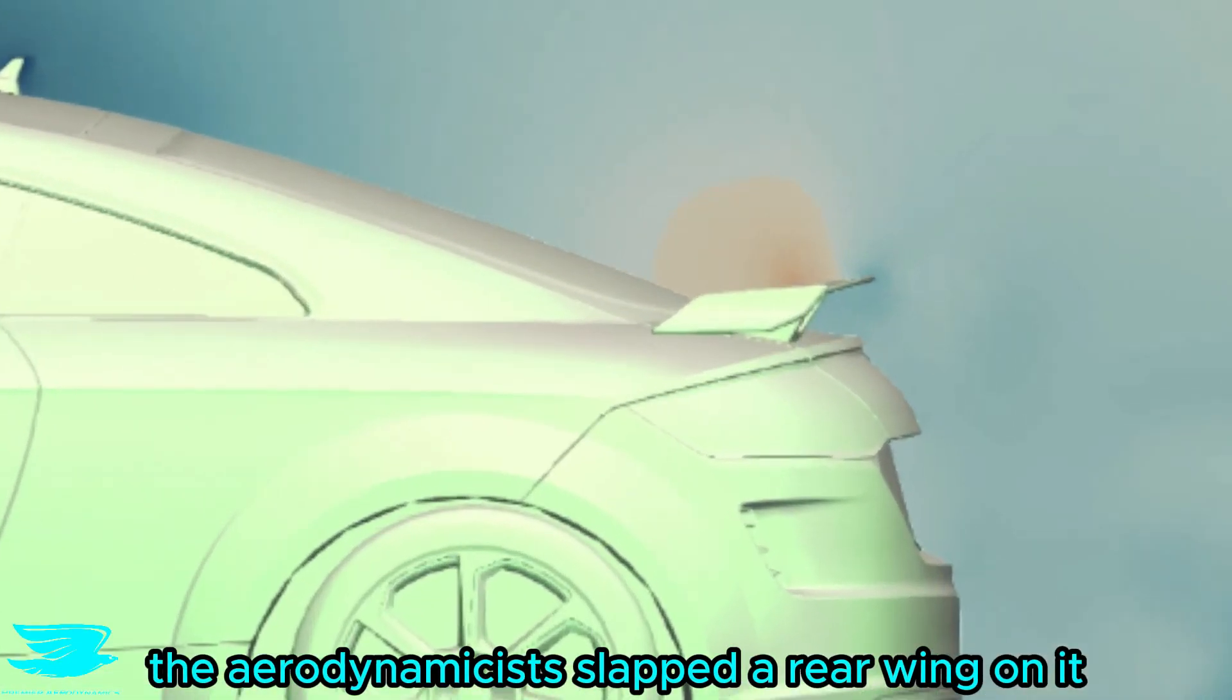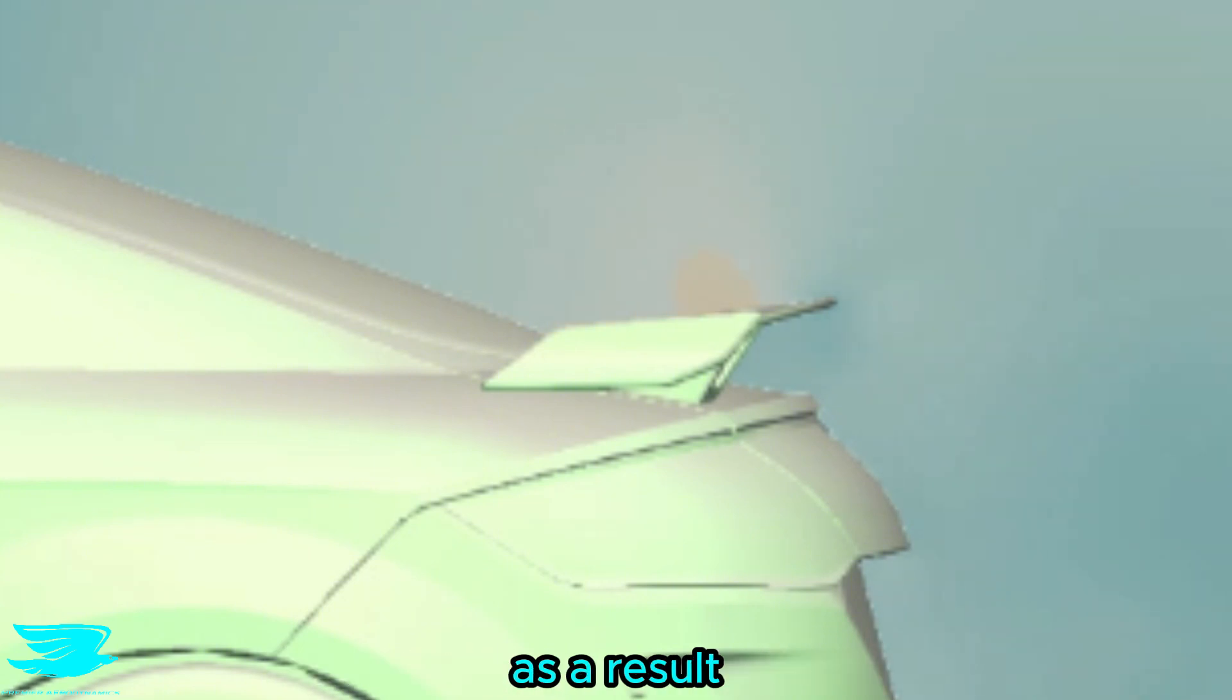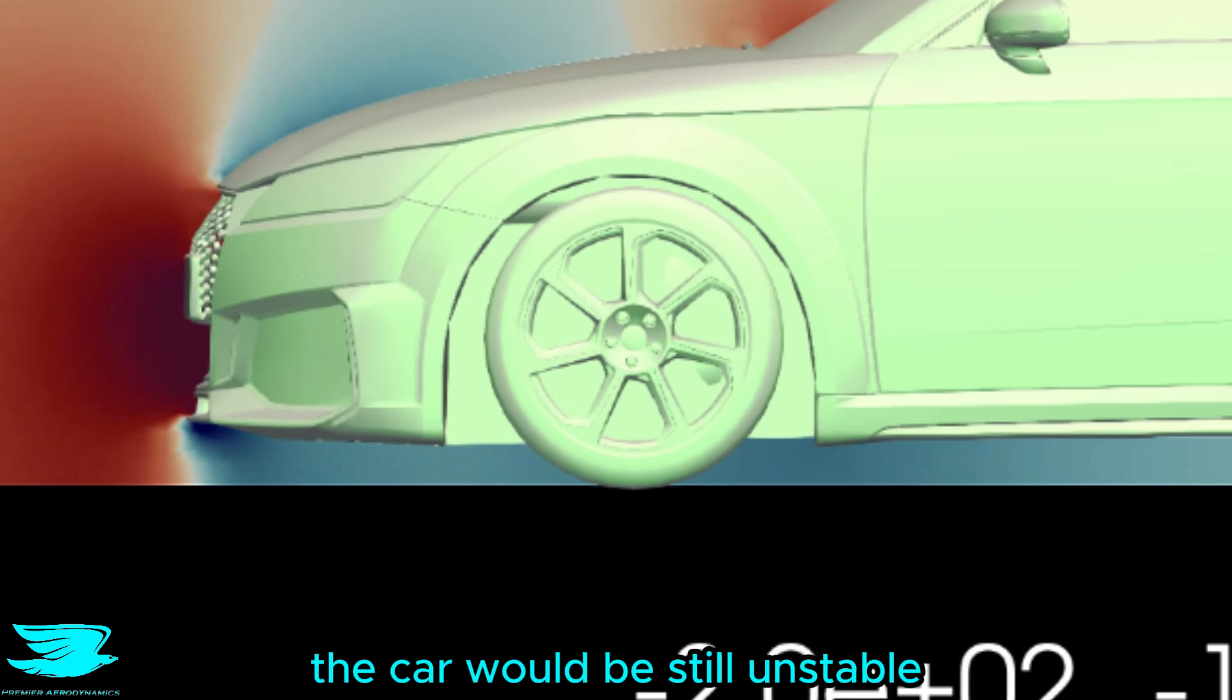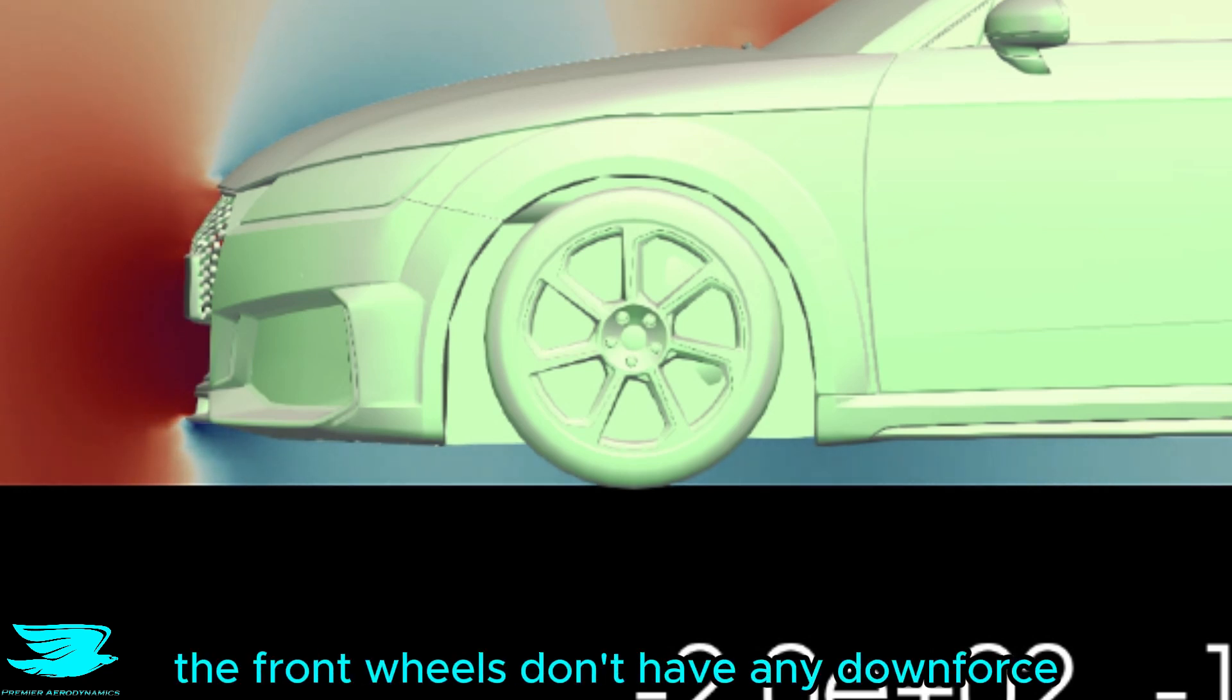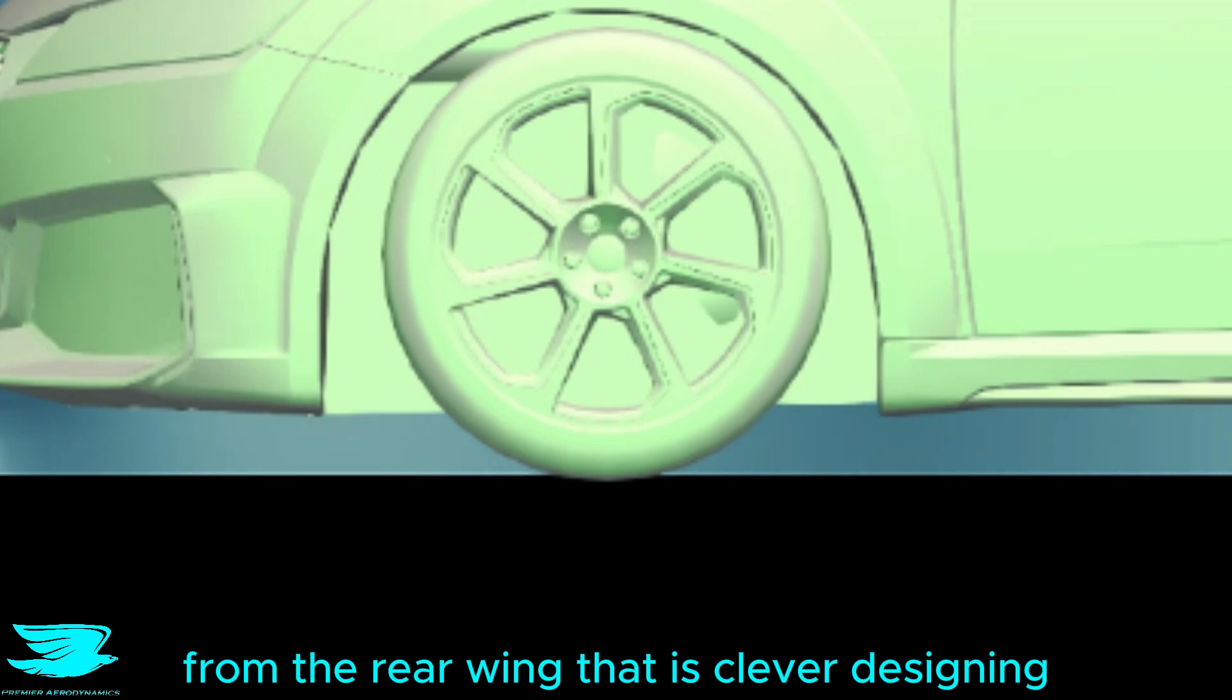To overcome this problem, the aerodynamicist slapped a rear wing on it, which helped a lot. But that only produces downforce at the rear wheels. As a result, the car would be still unstable, because around corners now, the front wheels don't have any downforce. So to correct that, there is now a lot of low pressure around the front wheels, which helps balance out the downforce from the rear wing. That is clever designing.